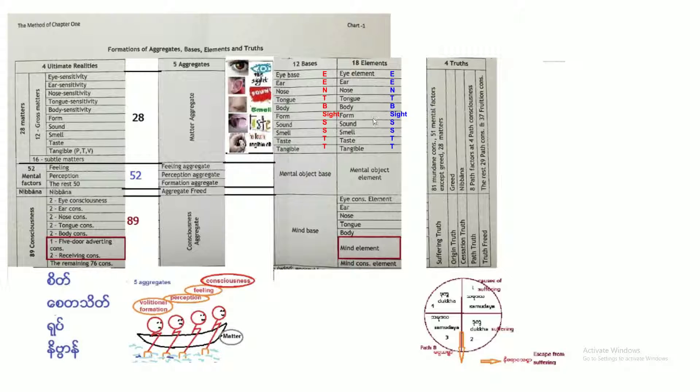In that way, twelve bases. Eighteen elements are the same as bases: eye, ear, nose, tongue, body elements, sight, sound, smell, taste, touch elements. And then mind object base and mind object elements. The same, but mind base and 89 consciousnesses are classified under one mind base. But under elements, there are seven elements: eye consciousness element, ear consciousness element, nose consciousness element, likewise tongue consciousness element, body consciousness element. Five-door adverting and two-receiving consciousness become mind element. The remaining 76 consciousnesses, we call it mind consciousness element. Mind element in Pali, we call it mano dhatu. When you learned about Patthana, you know mano dhatu. In the mind consciousness element, mano vinnana dhatu.